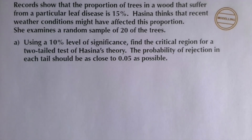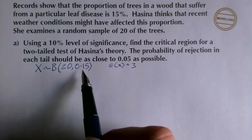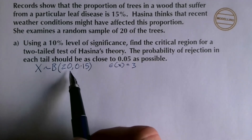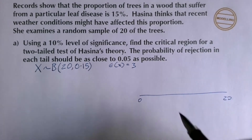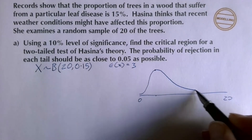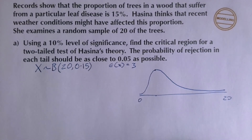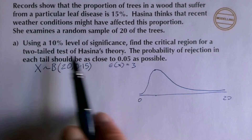Here's a bigger question — just the first part. Pause the video and have a go. We have a binomial distribution with 20 trials and p = 0.15. The expected mean is 3. For a two-tailed test at 10% significance, the probability of rejection at each tail should be as close to 0.05 as possible.